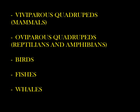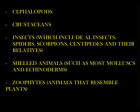Yes, at this point, whales were considered a separate group because of their external appearance. The bloodless animals were also separated into five groups: cephalopods, crustaceans, insects (which include all insects, spiders, scorpions, centipedes and their relatives), shelled animals such as most molluscs and echinoderms, and zoophytes — animals that resemble plants.